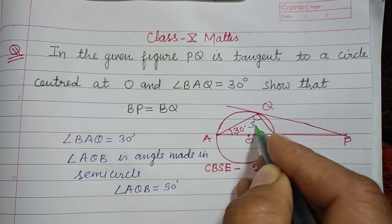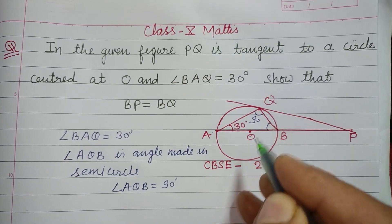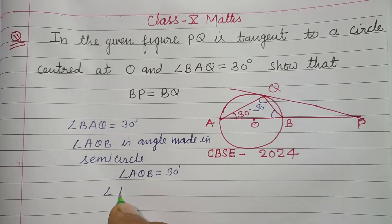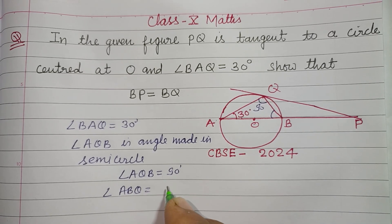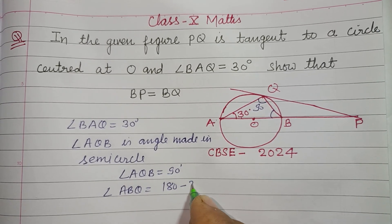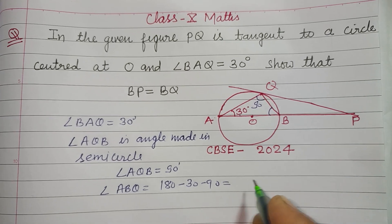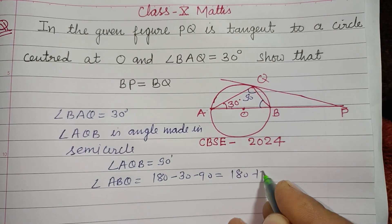So this is 90 degrees. Now we can easily find angle ABQ equals 180 minus 30 minus 90, which is 180 minus 120.